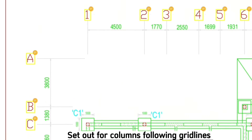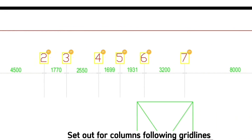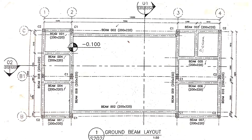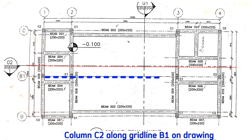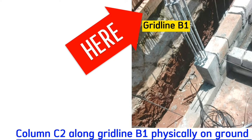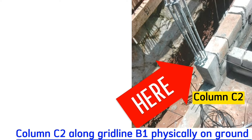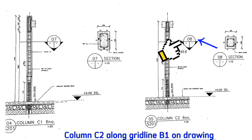These steel bars must be plumb and straight and must follow the grid lines. Grid lines are important because they show the exact position of the columns. For example, this is column C2, which runs along grid line B1 on the drawing, and that is exactly how we did it on the ground — grid line B1 and column C2.